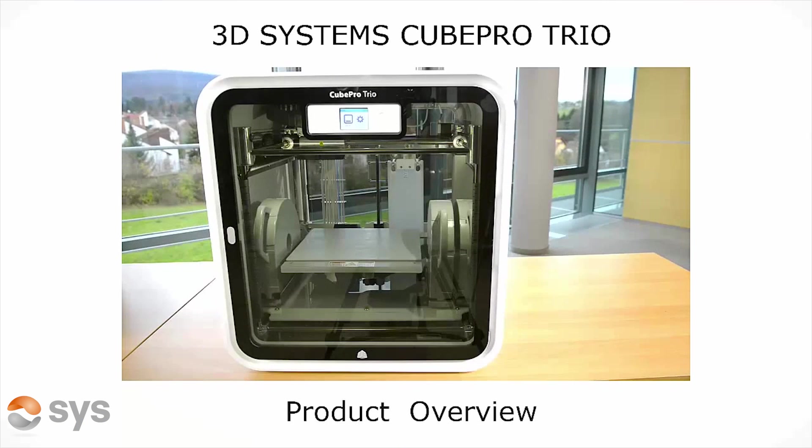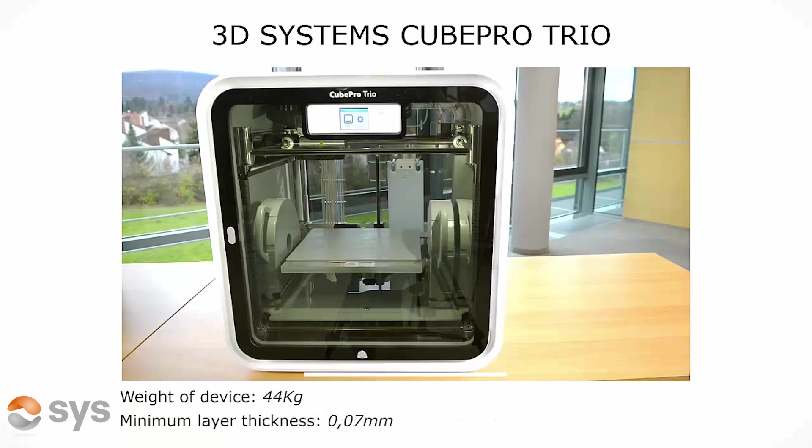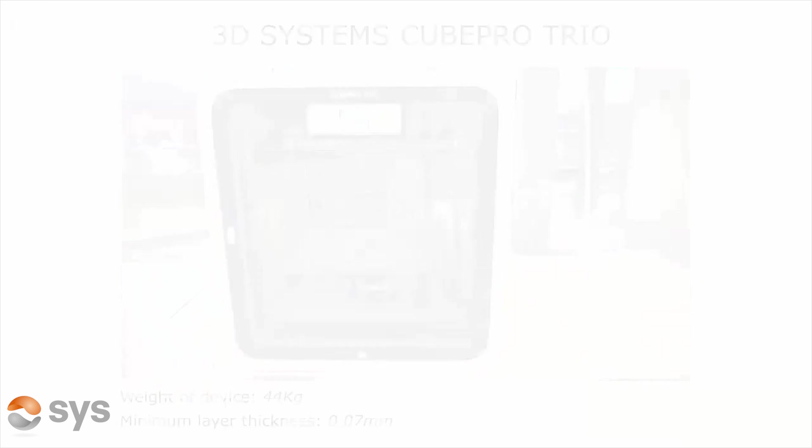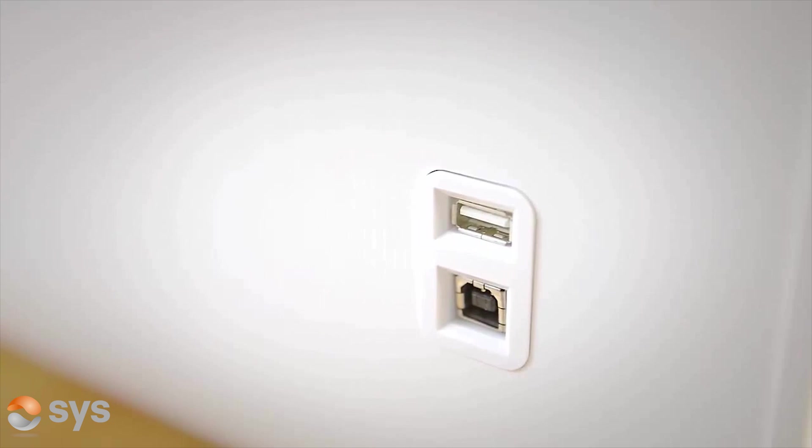The Cube Pro features a small touchscreen panel and has a modern and aesthetically appealing look and feel. Dimensionally, similar in footprint but certainly smaller in height than the Uprint SE. Connectivity wise, the Cube Pro has wireless, a USB host port for a USB stick, and a USB device port for a dedicated printer connection.